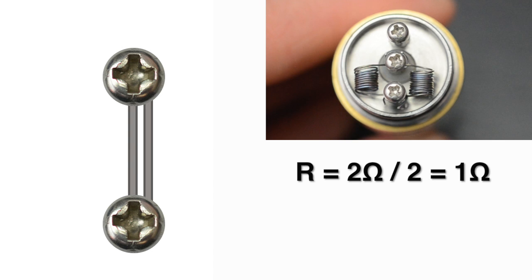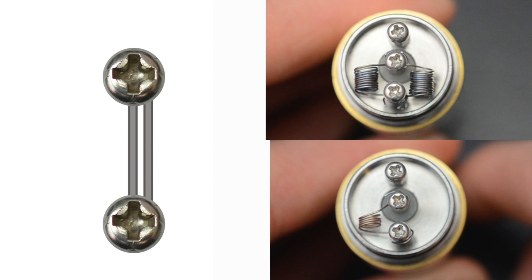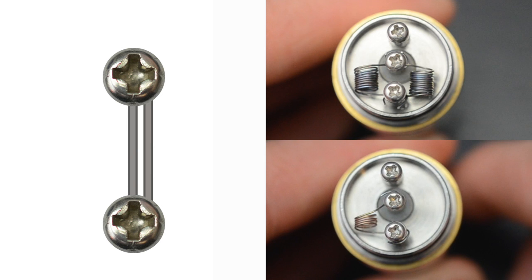To get 1 ohm using two coils, each coil will have to be 2 ohms. So we end up using 4 times more wire than a 1 ohm single coil build using the same wire.